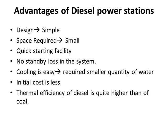The advantages of diesel power stations are: they are very simple in design and require less space. They can be quickly started — typically within 5 to 6 hours. They can also be stopped when required, so there is no standby loss. Cooling is easy and requires only a small quantity of water. The initial cost is less compared to other power stations, and the thermal efficiency of diesel is higher than that of coal.